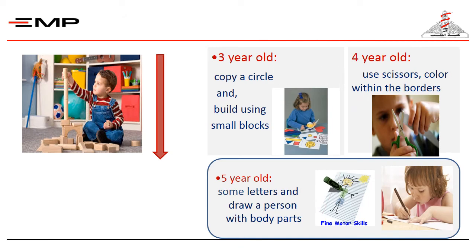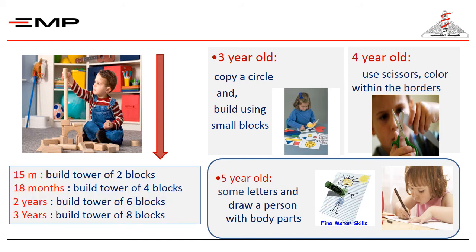Building towers is an important indicator of hand-eye coordination. The height of the tower increases with age, as you can see in the table. It starts with a tower of two blocks at the age of 15 months, to a tower of eight blocks at the age of three years. Then children are capable of copying shapes, using scissors, drawing body parts, and writing some letters, denoting that they are ready to go to school. More details are available in your learning guides.